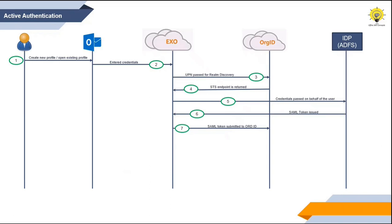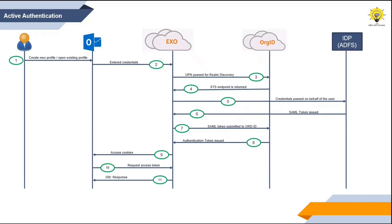Exchange Online submits that SAML token to org ID, and in return org ID issues an authentication token to Exchange Online. Exchange Online then issues access cookies to the client machine. The client machine requests the access token from Exchange Online, Exchange Online issues the access token to the client, and the user is able to configure the Outlook profile. So this is how active authentication works in ADFS when your domain is federated.